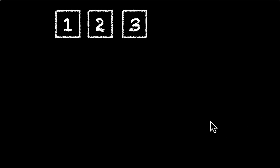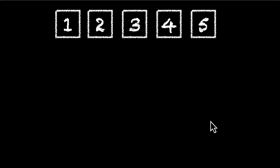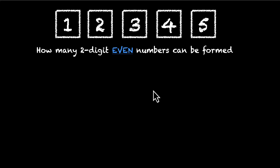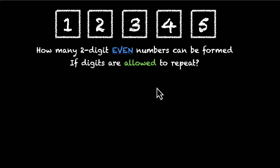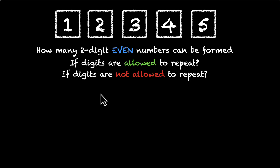Let's say you have these five digits: 1, 2, 3, 4, and 5. The question is how many two-digit even numbers you can form. The first part is if the digits are allowed to repeat, and the second part is if the digits are not allowed to repeat. So you have to figure both of them out.